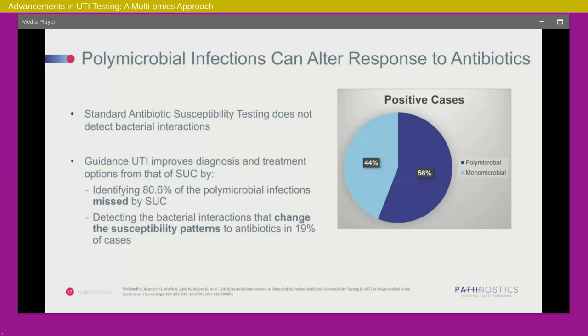How does this impact things? We find that about one in five times, by not having the correct identification, we would have missed the correct antibiotic — we would have missed the correct answer.